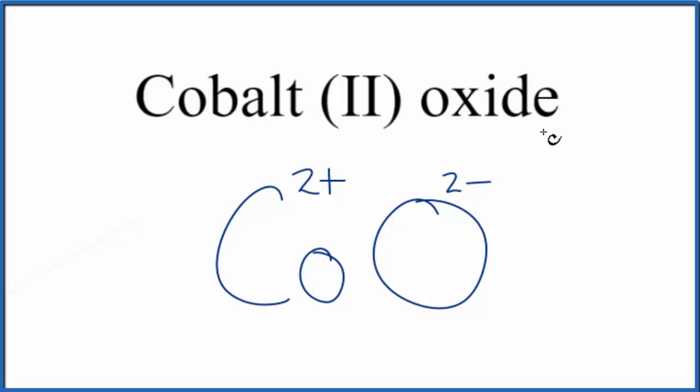Because cobalt 2 oxide is a neutral compound, the net charge needs to add up to zero. 2 plus and 2 minus adds up to zero. So the formula for cobalt 2 oxide is CoO.